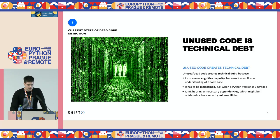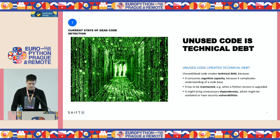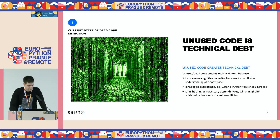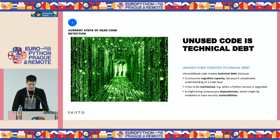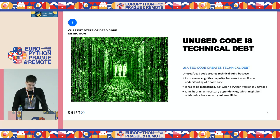In addition, unused code might increase security risks — for example, if unused code brings in outdated dependencies which have security vulnerabilities. So that code could be compared with evil agents from the movie Matrix which are waiting to cause you trouble. And we definitely want to get rid of them.